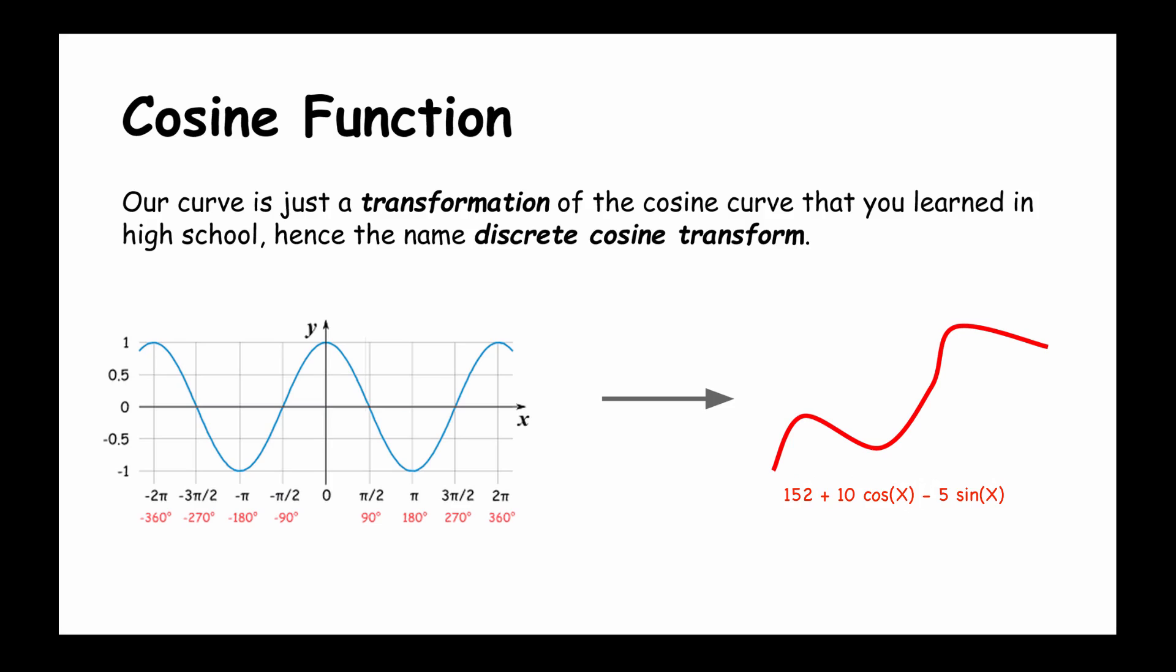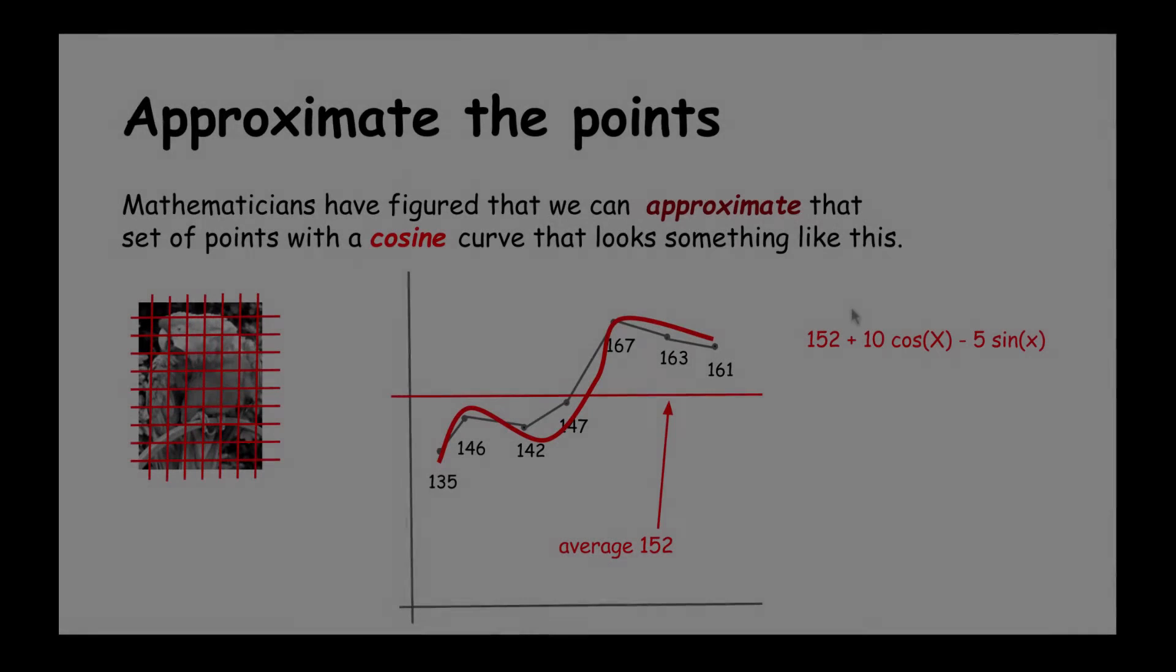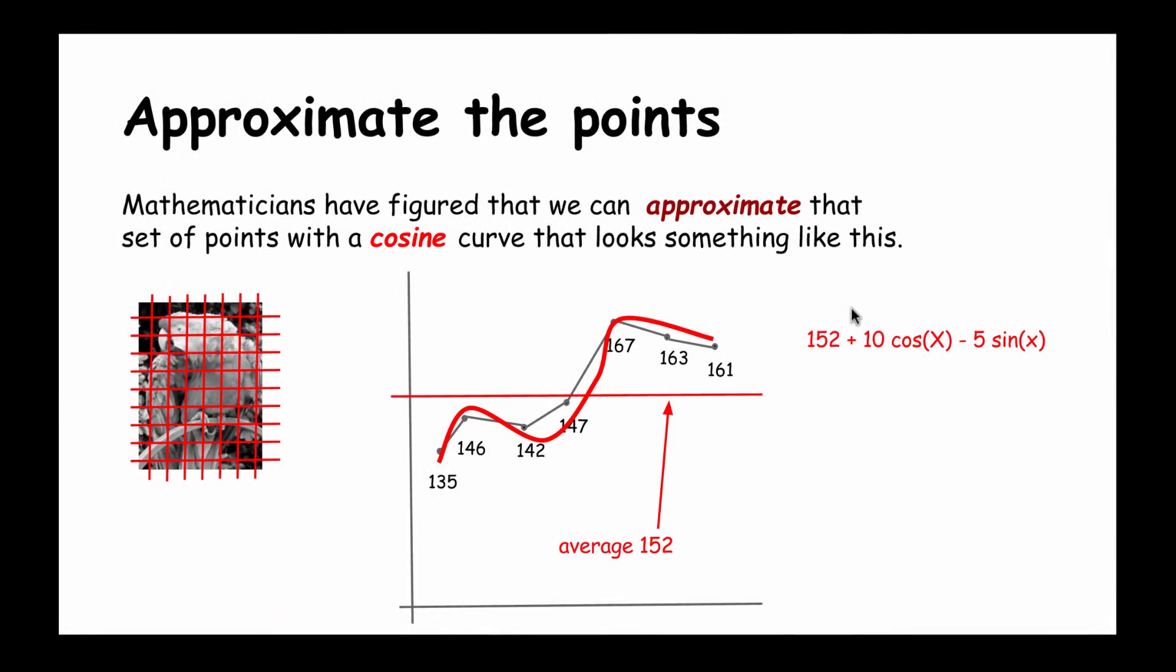The way we get the curve is we scale the original cosine curve and shift it to the right or left, and we add several cosine and sine curves together. Doing that, we can go from curves that look like this to one that looks like this. You can see that the red line is an approximation of the original set of points. It's not a completely precise one, but we can actually make it more precise by throwing in more cosine and sine terms into this expression.